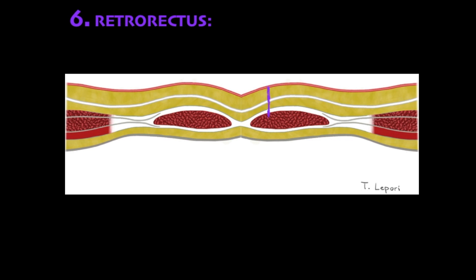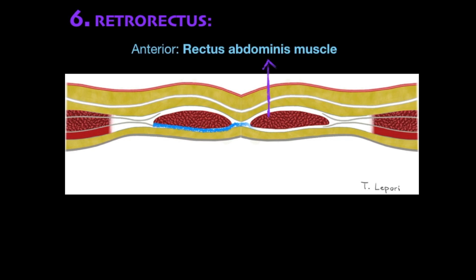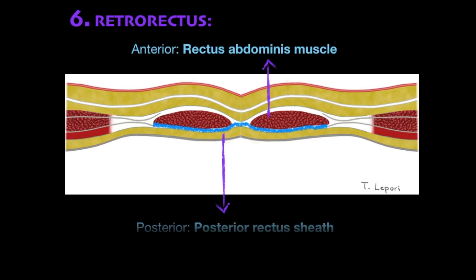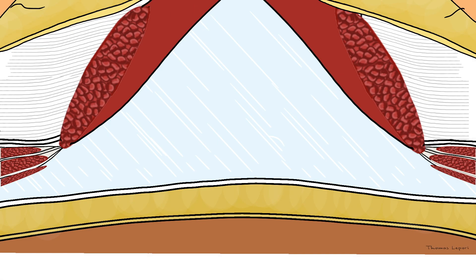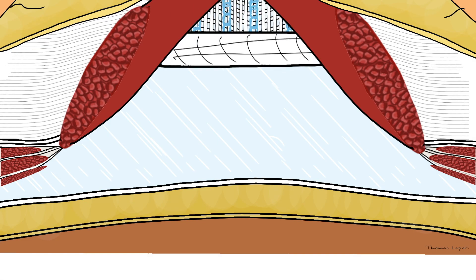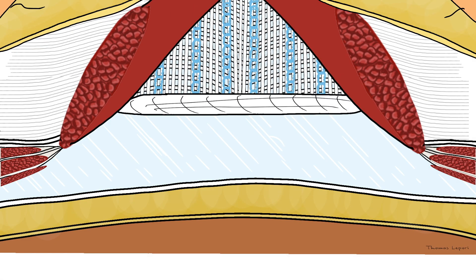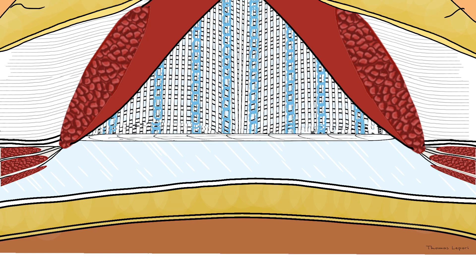The retro-rectus plane is composed of the rectus abdominis muscle anteriorly and the posterior rectus sheath posteriorly. This plane is used in the Rives-Stoppa technique.